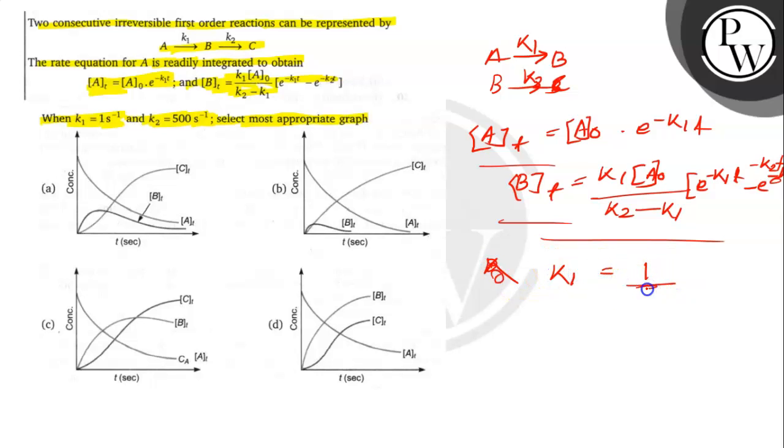When K1 is equal to 1 per second and K2 is equal to 500 per second, select the appropriate graph.